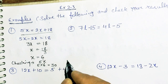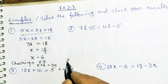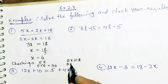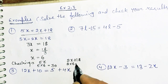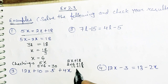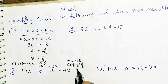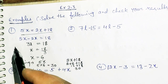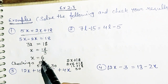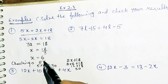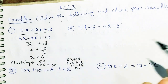Then RHS. What is RHS? RHS is 2x plus 18. So 2 multiplied by 6 is 12, plus 18, the answer will be 30. So LHS equals RHS. I will only explain the checking for the first part. Whenever you find the value of x, put the value of x back into the question.